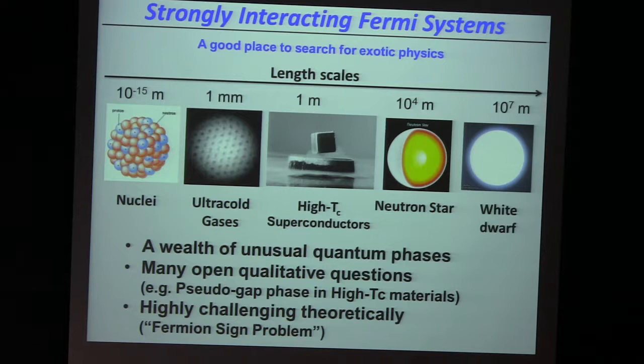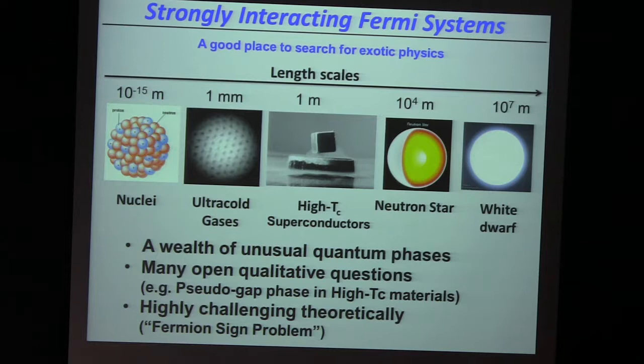Just to put everyone on the same page, we are very interested in these strongly interacting systems that we usually have a hard time reaching. For example, these neutron stars are very far away. We have to build LIGO to see well in black holes — that's the first thing that we saw. Maybe we will see neutron stars in the gravitational wave emission at some point. But clearly, they're far away — not so practical to get there.